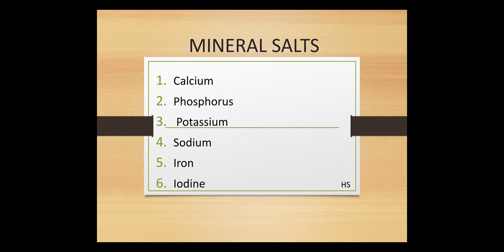Mineral salts are also very important. When mothers cook food, they add a pinch of salt — this not only gives taste but also provides nutrition. The important mineral salts are calcium, phosphorus, potassium, sodium, iron, and iodine. These are found in dairy food, beef, cabbage, table salt, banana, potato, and citrus fruits like lemon and oranges, which are sour in taste.